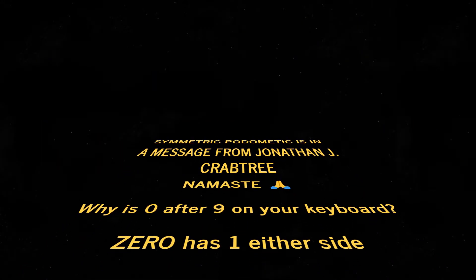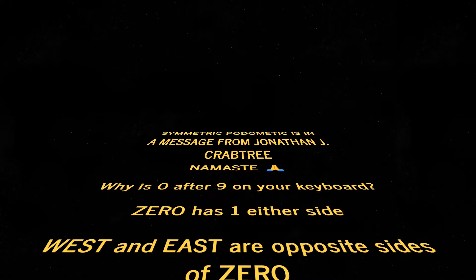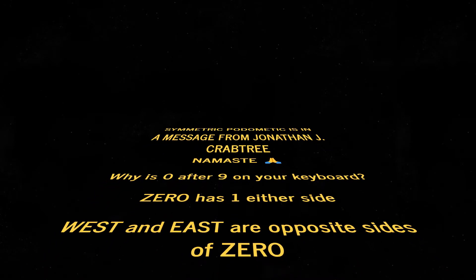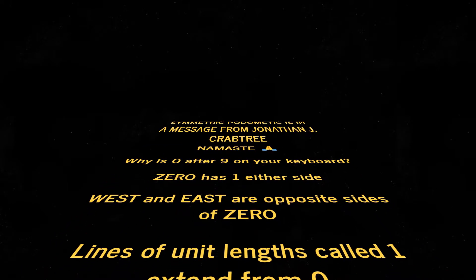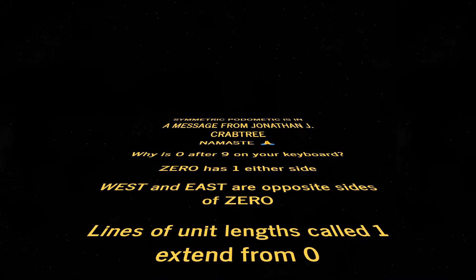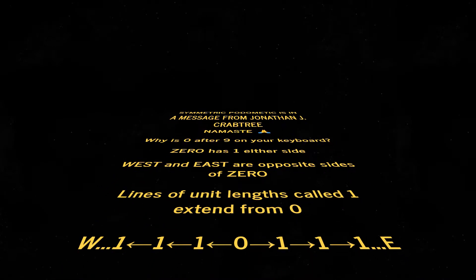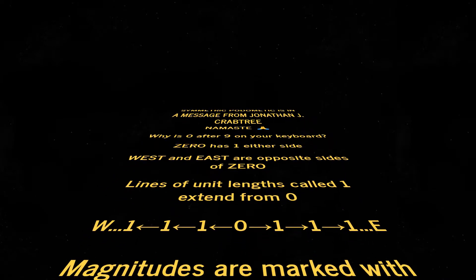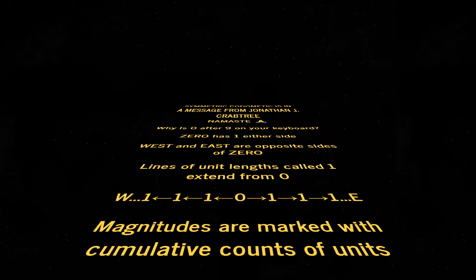Why is zero after nine on your keyboard? Zero has one on either side. West and east are opposite sides of zero, and lines of unit lengths called one extend from zero.